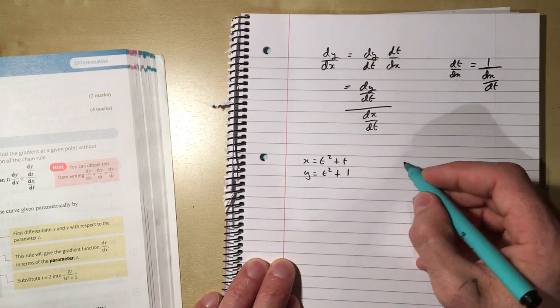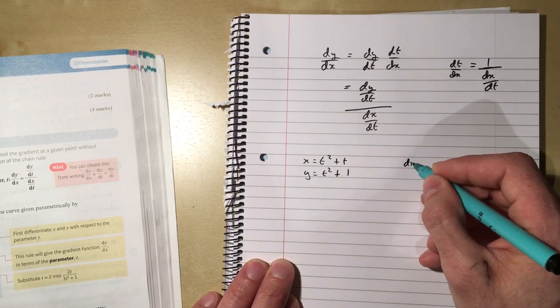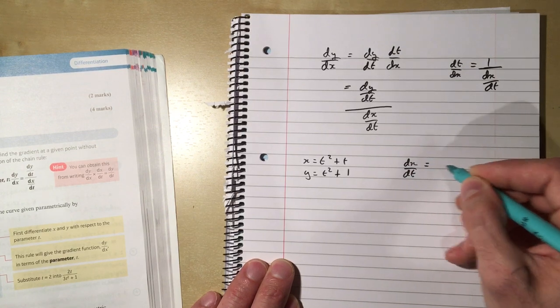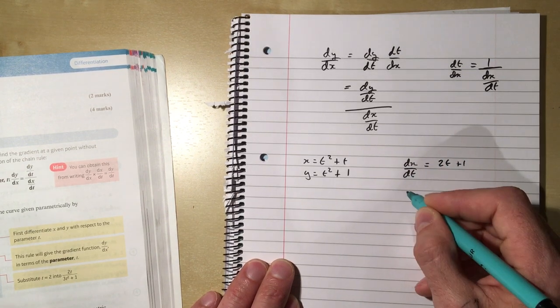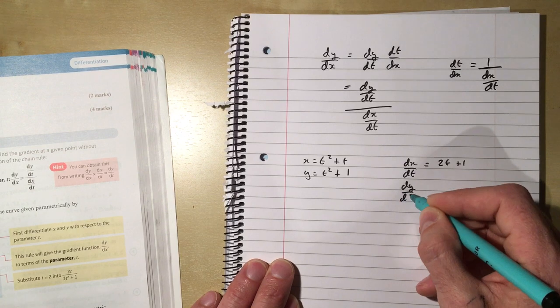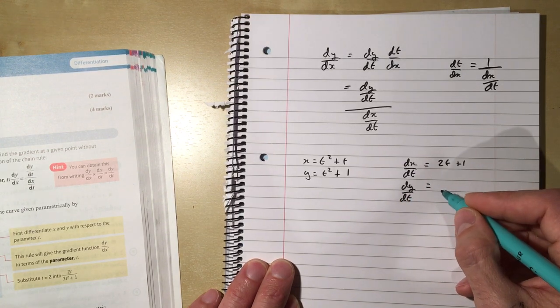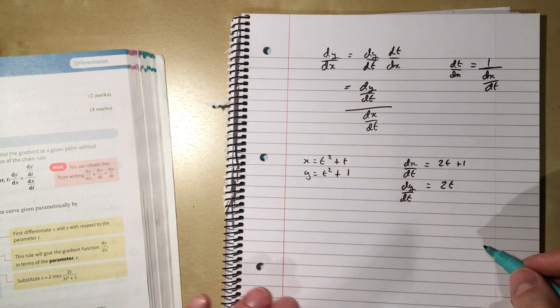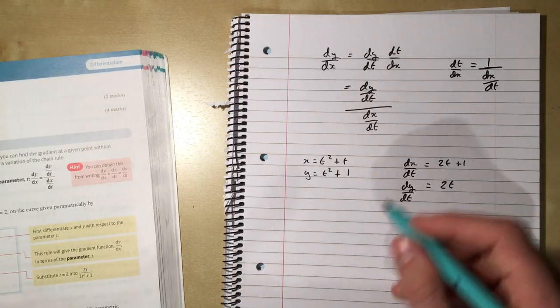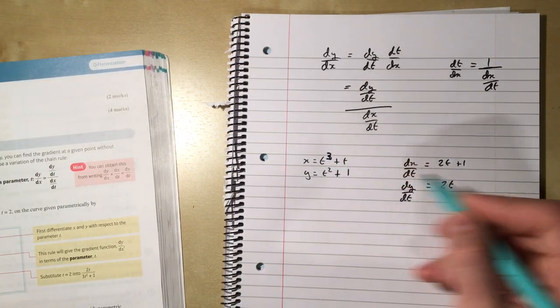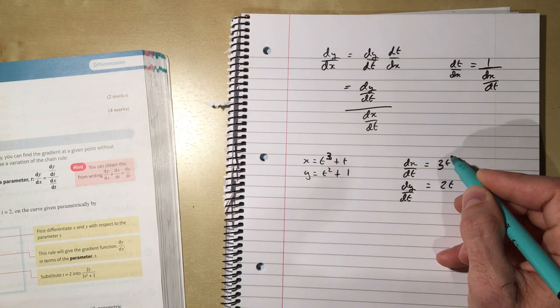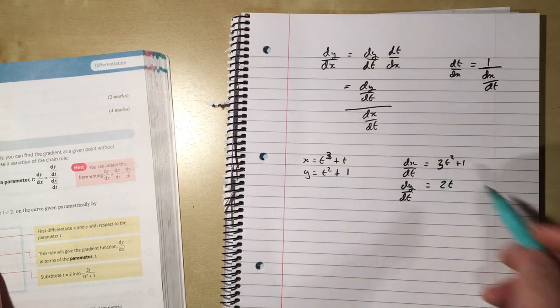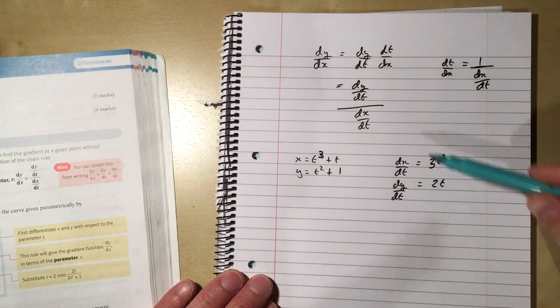So in this case, I can find dx/dt as 2t plus 1, I can find dy/dt as 2t. Have I written that? Oh sorry, I'm trying to stick with the example from the book, so that would be t cubed plus t. I misread that, so that would be 3t squared plus 1.